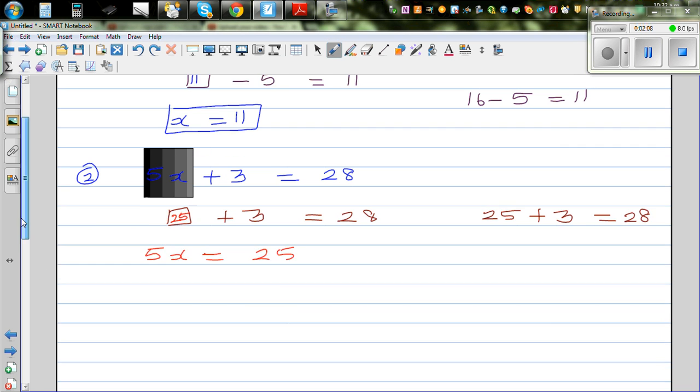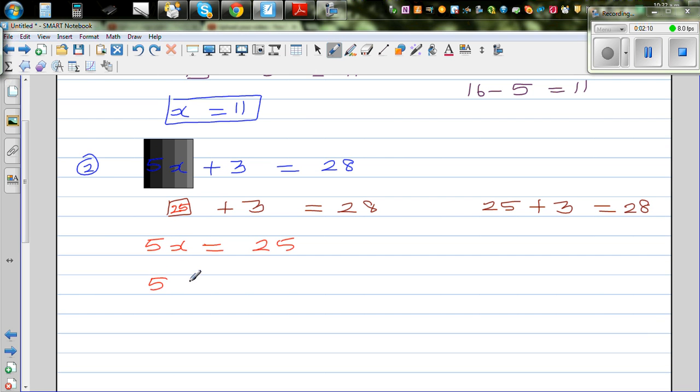Okay, now you are asking the question, 5 times what gives you 25? So well, 5 times 5 is 25. So this should be 5. That means your x is 5.